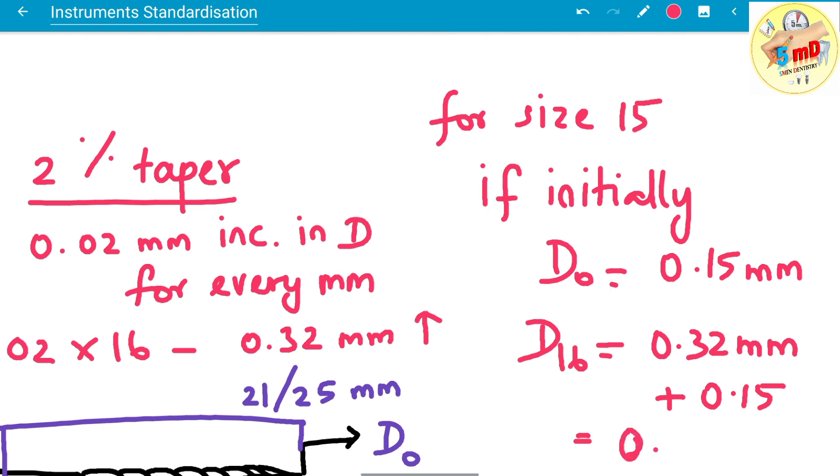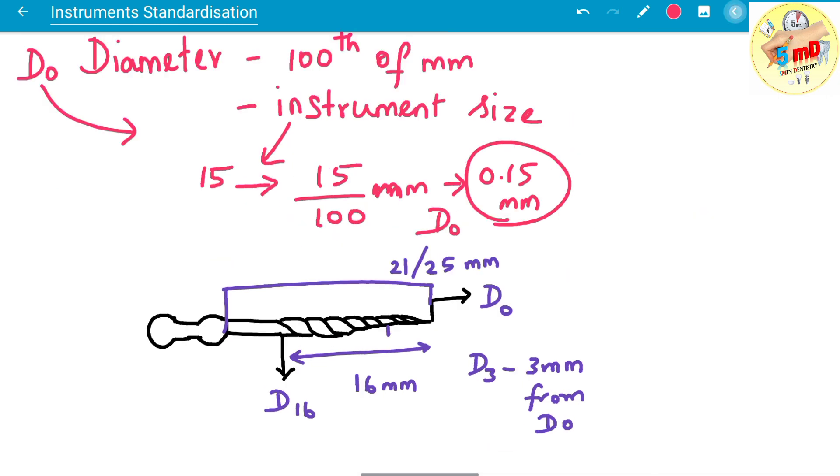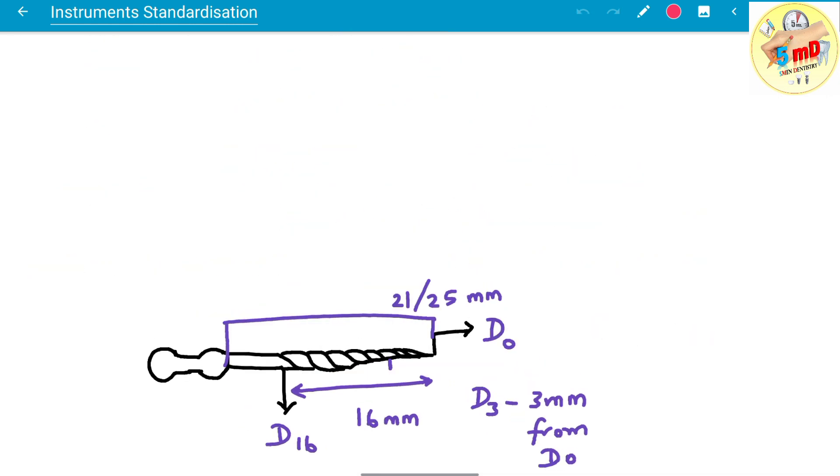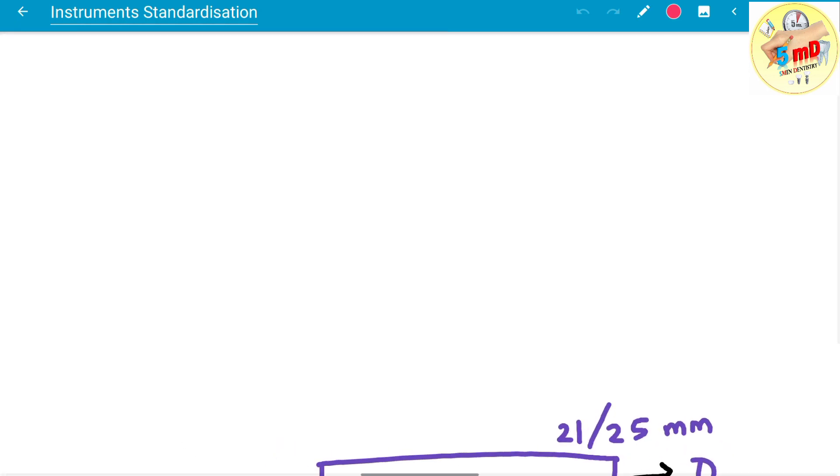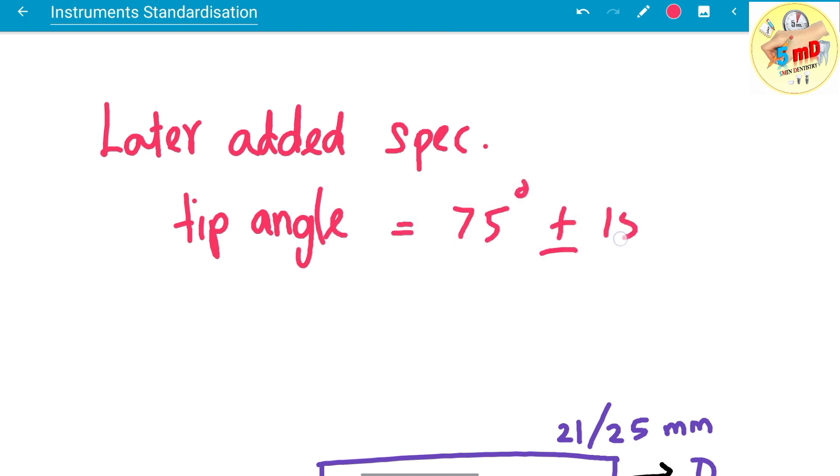For 2% taper this is the standardization. For 4% and 6% taper, we have an increase of 0.04 or 0.06 mm in diameter per mm in length as follows. Later added specifications include the d3 we saw earlier, that is 3 mm from d0.